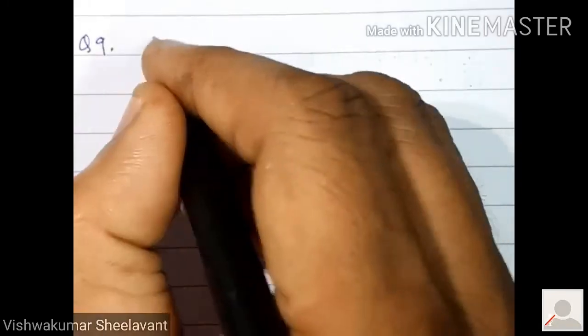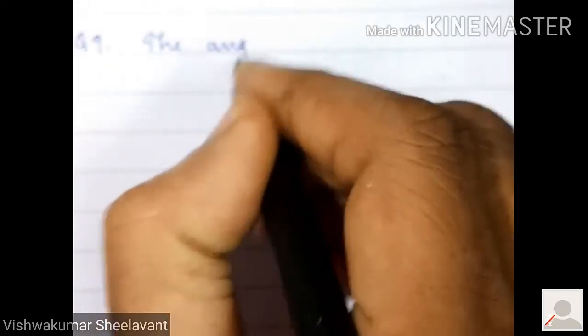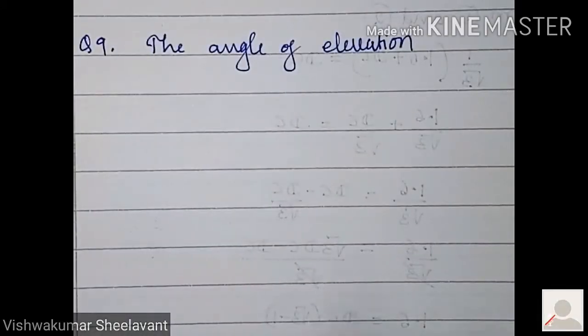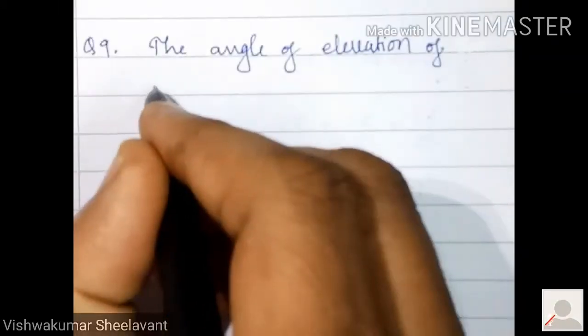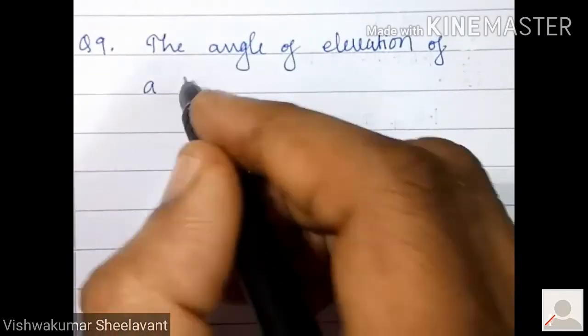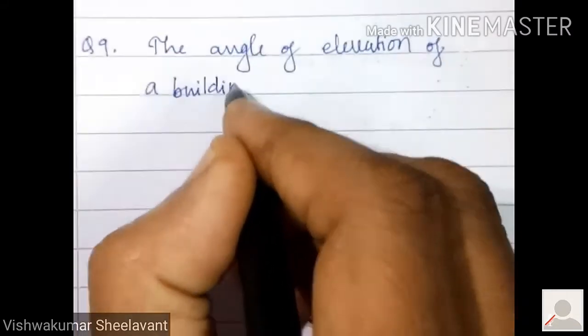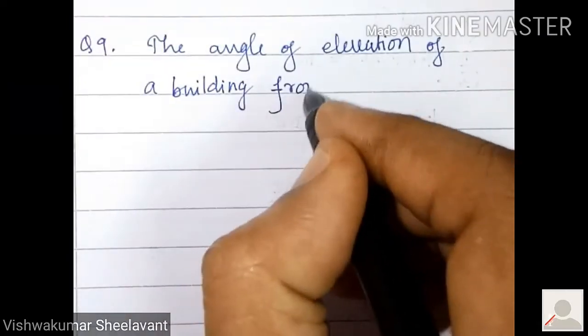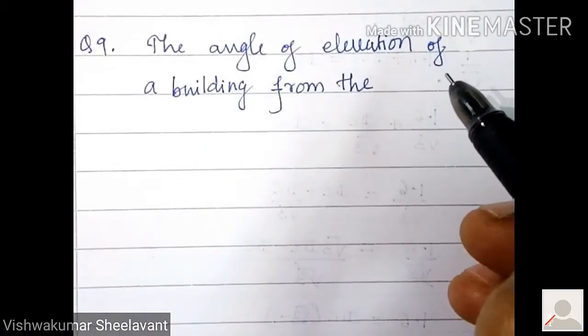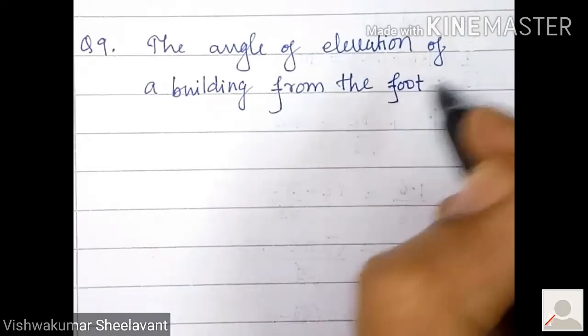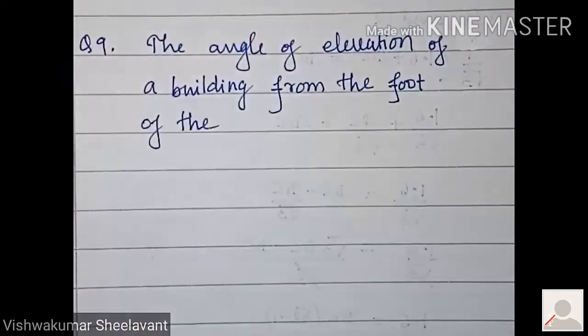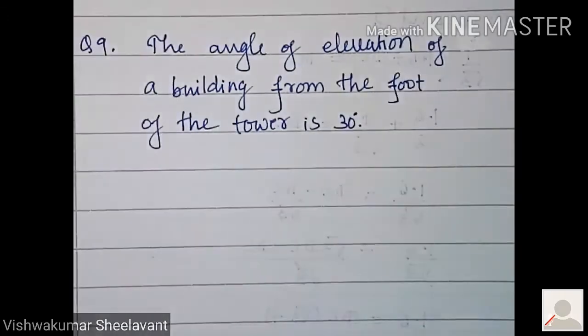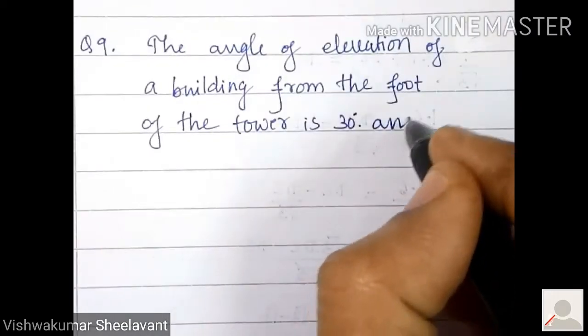Question number 9. The angle of elevation of a building from the foot of the tower is 30 degrees and